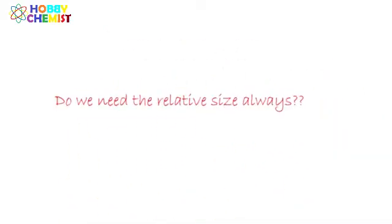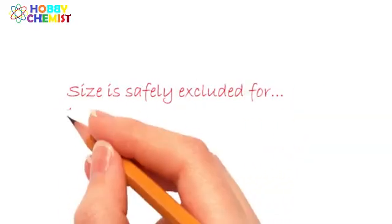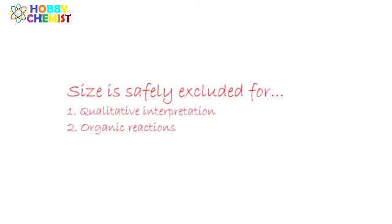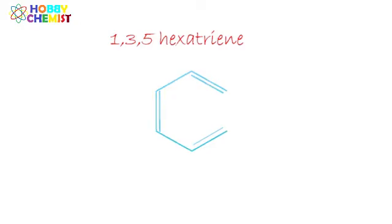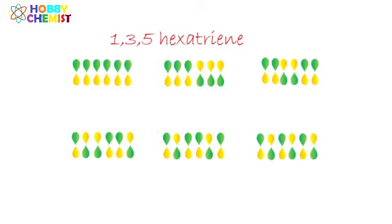For qualitative purpose, we only need the symmetric characteristics of the molecular orbital, not the size. Usually, we neglect the size of the individual orbitals for qualitative purpose. The MOs of hexatriene and the number of nodes follows the same trend.